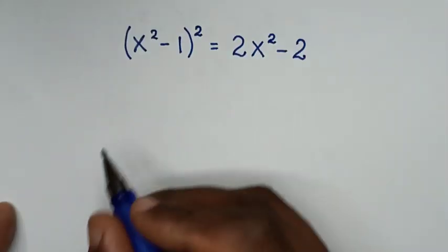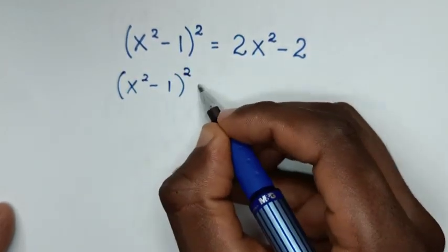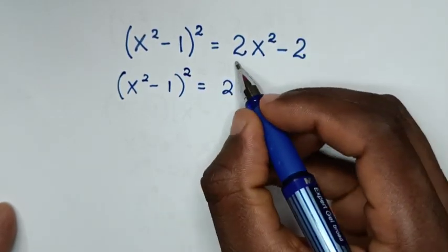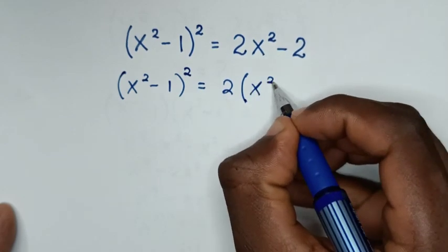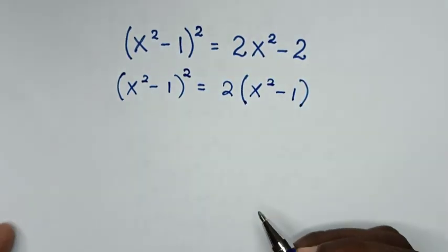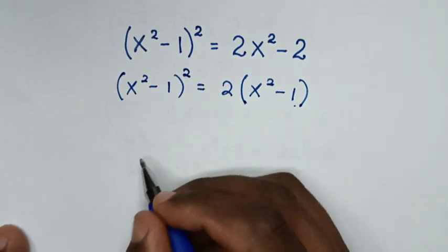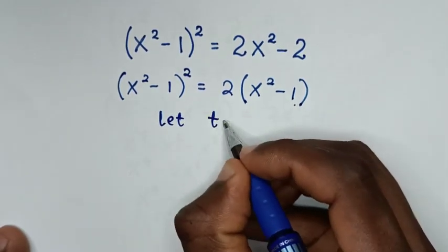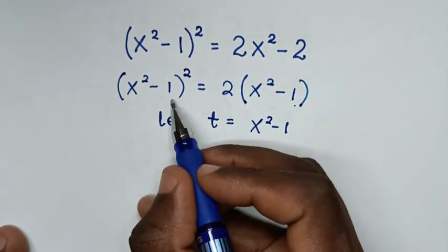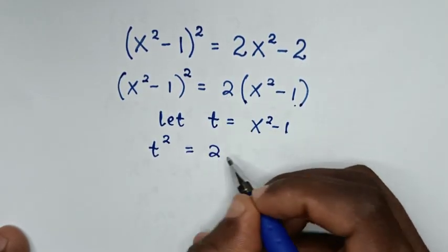Now solving by another method. From the original problem (x² - 1)² = 2x² - 2, we notice 2 is common on the right side, giving 2(x² - 1). We let t = x² - 1, so the equation becomes t² = 2t.